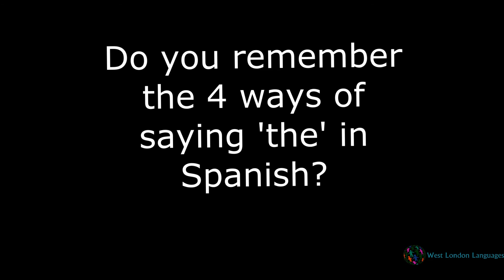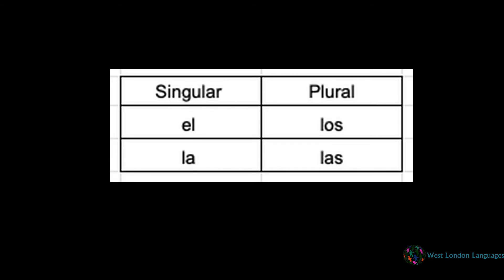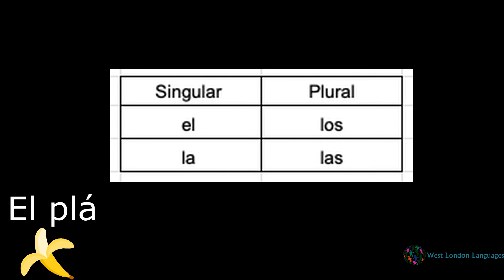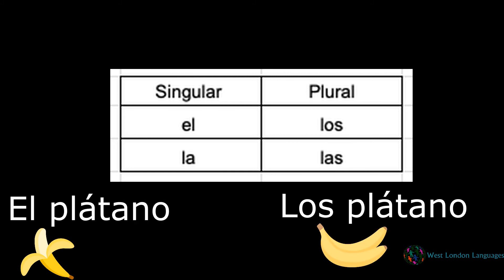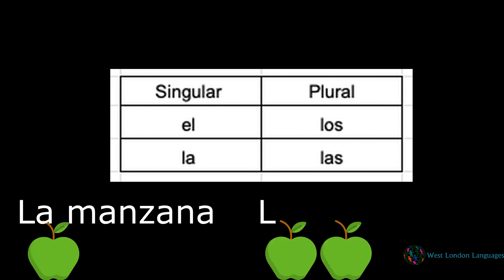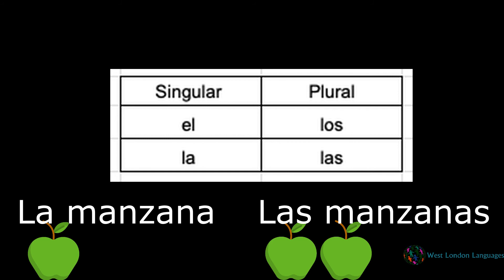Do you remember the four ways of saying 'the' in Spanish? We have two for singular and two for plural. El for a masculine singular noun converts to los in the plural, and la for a feminine singular noun converts to las when it becomes plural. For example, el plátano would become los plátanos if we had more than one banana, and la manzana would become las manzanas if we had more than one apple.